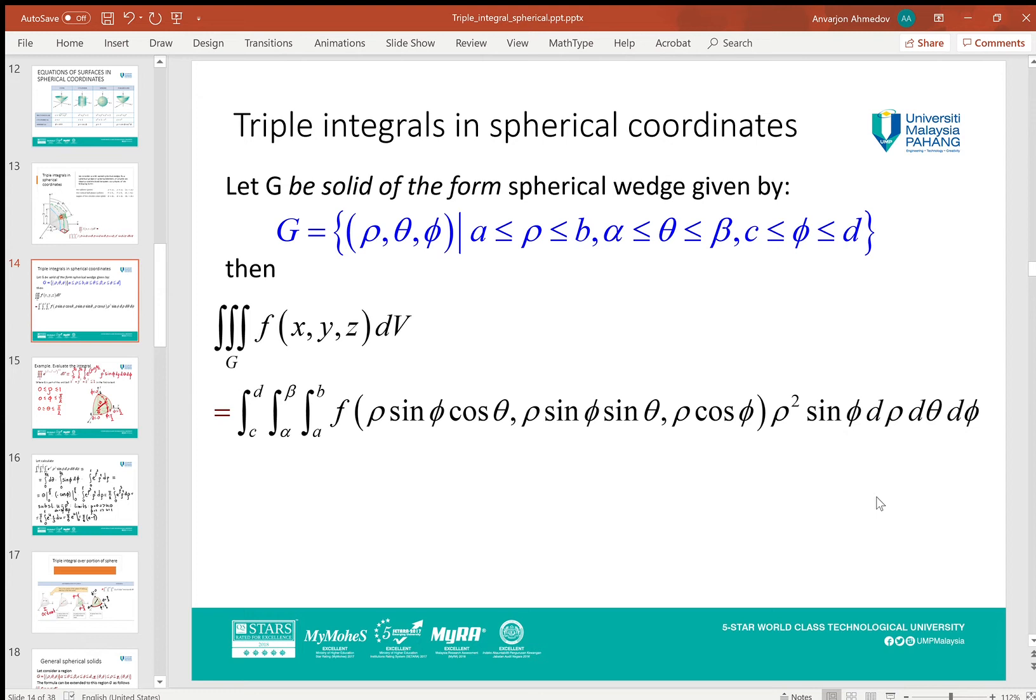and limits according to the ρ, φ, θ conditions. So ρ changes between a and b, that means between two spheres. θ changes between α and β—it is two vertical planes—and φ changing from c to d.